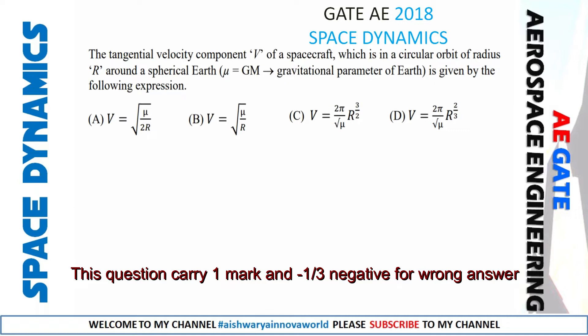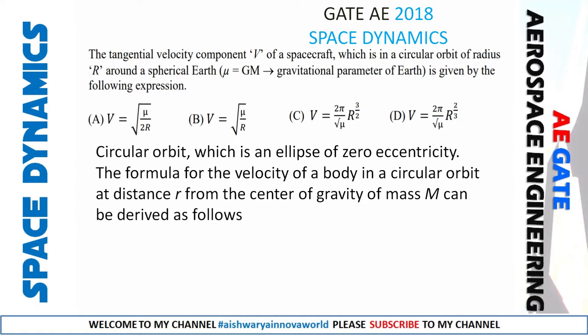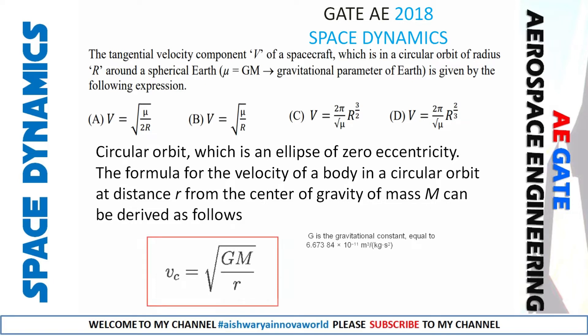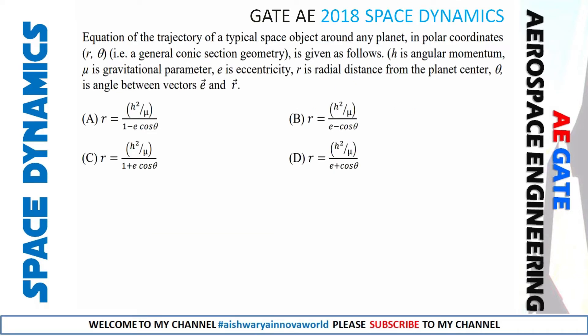Let's recall the formula. You have to memorize: for a circular orbit, the circular velocity v_c equals sqrt(GM / r), or equivalently sqrt(mu / r). So the answer is option B.